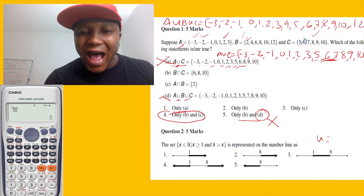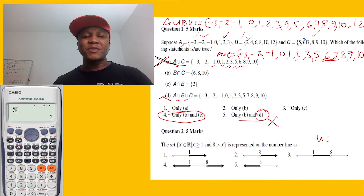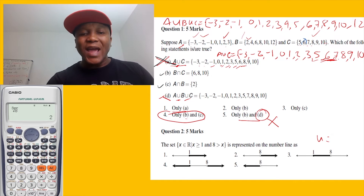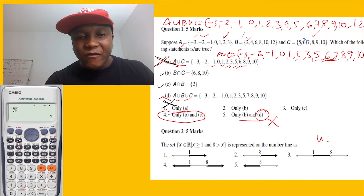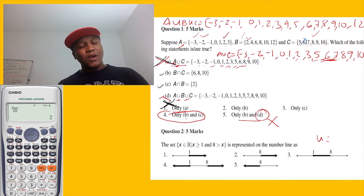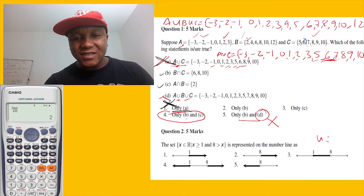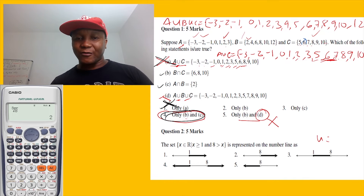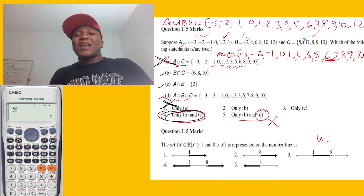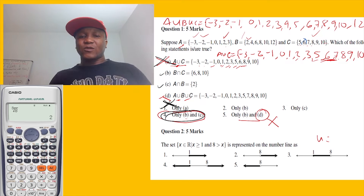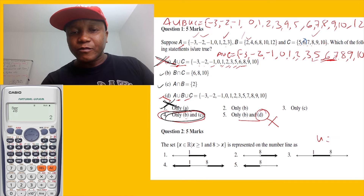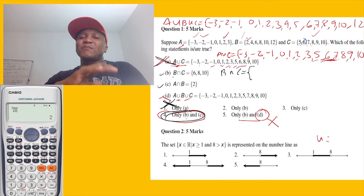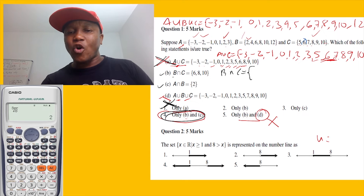So I made a mistake there — statement A is not true. You have to be very careful. So the correct answer is B and C. You don't need to redo B intersection C because we already confirmed it.